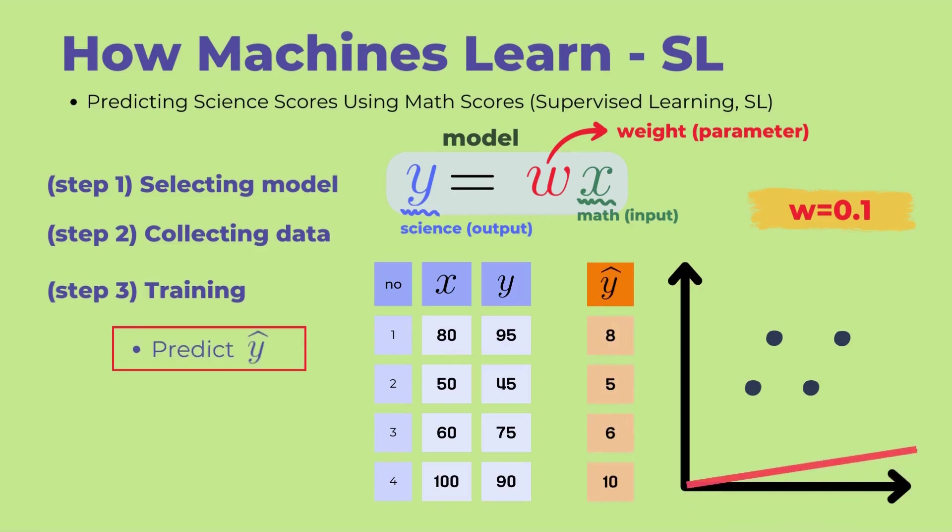The first step in the training phase is to output the predicted values using the current model. This means inputting X values, which are the math scores of 4 students, 80, 50, 60, and 100, to estimate their science scores. Let's examine the first student's score. The math score, X, is 80, and the predicted science score is 8 points, obtained by multiplying by 0.1.